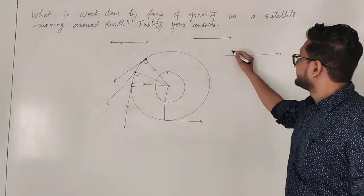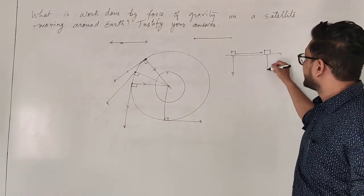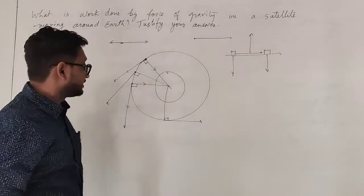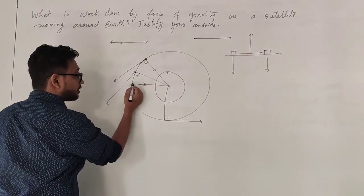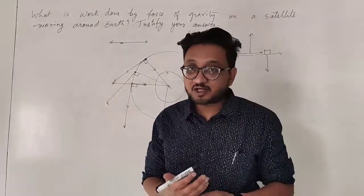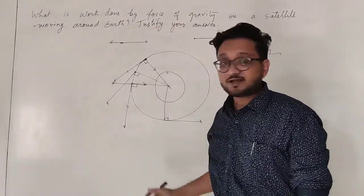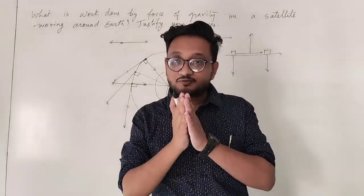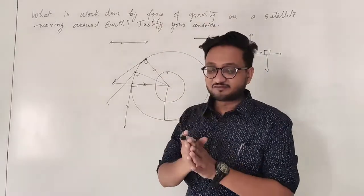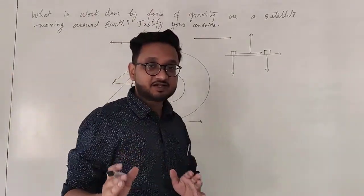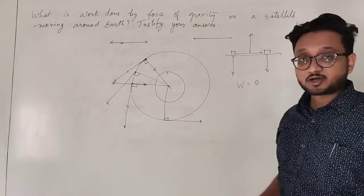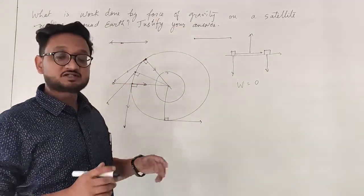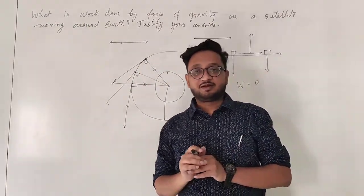When an object is moving in a straight line horizontally, the work done by gravitational force is zero because there is only horizontal displacement and no vertical displacement. In the case of the satellite, it is not moving toward or away from the Earth — it is continuously moving in a circular manner, which is always perpendicular to the gravitational force. When the angle between the gravitational force and displacement is 90 degrees, work done is zero, because there is no vertical displacement — it is always horizontal displacement, even in circular motion.